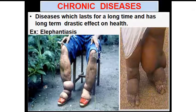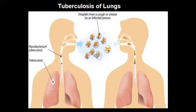Let's take a few examples of chronic diseases — diseases which last for a long time and have a long-term drastic effect on health. For example, elephantiasis, which is caused by the filarial worm, makes the foot look like an elephant's leg. Now let's talk about tuberculosis of the lungs — it spreads through droplets from a cough or sneeze by an infected person. The mycobacterium tuberculosis bacteria will infect the lungs and enter the other person. That is why many years back, a person suffering from TB should be isolated in a room because he or she becomes a spreader of the disease.